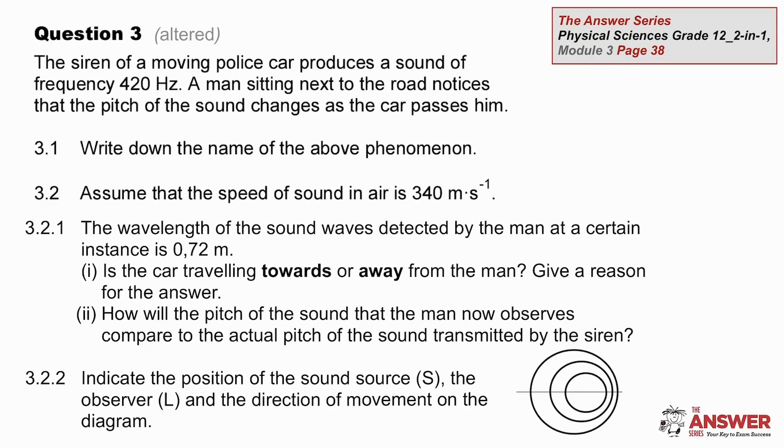Question 3 uses a context where the Doppler effect is very easily noticed. When this police car passes by the man sitting on the side of the road, he notices a drop in the pitch. You can put a name to what he's noticing and then you can use these values of speed and wavelength to calculate the frequency he heard.